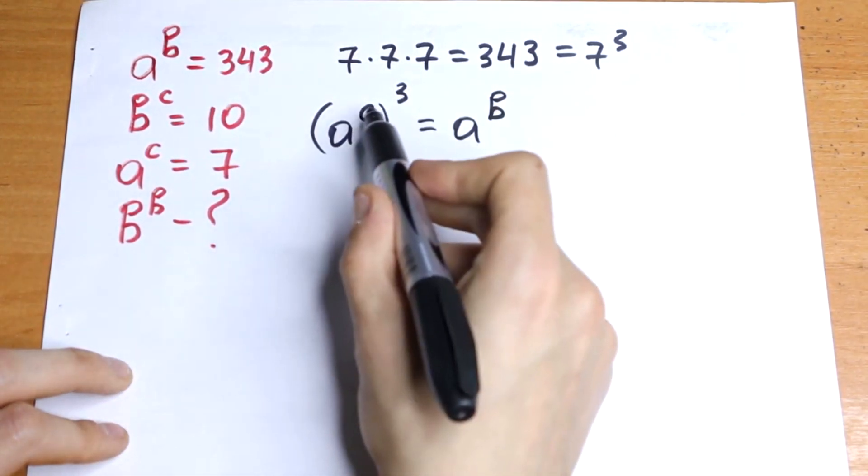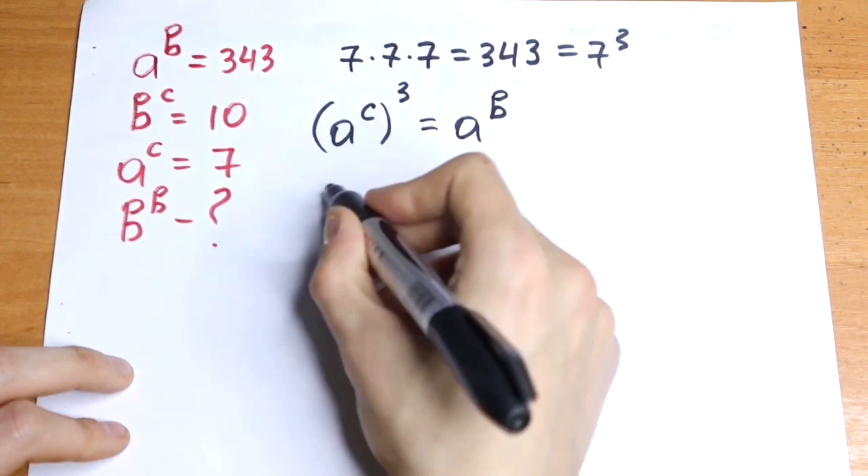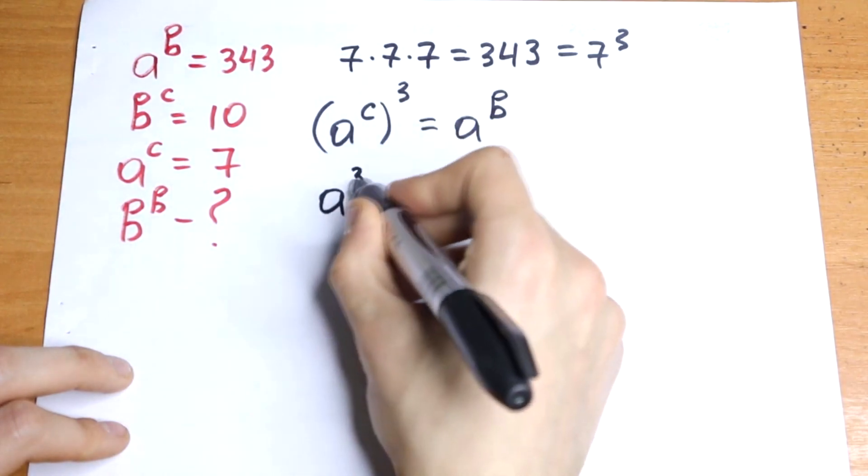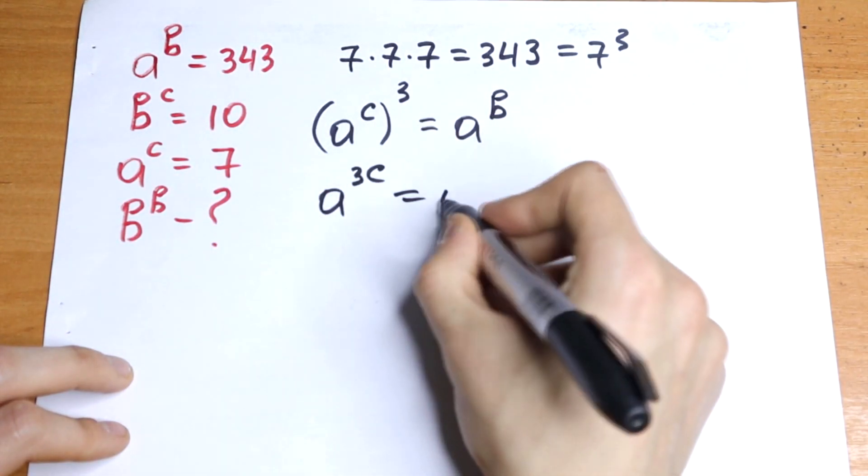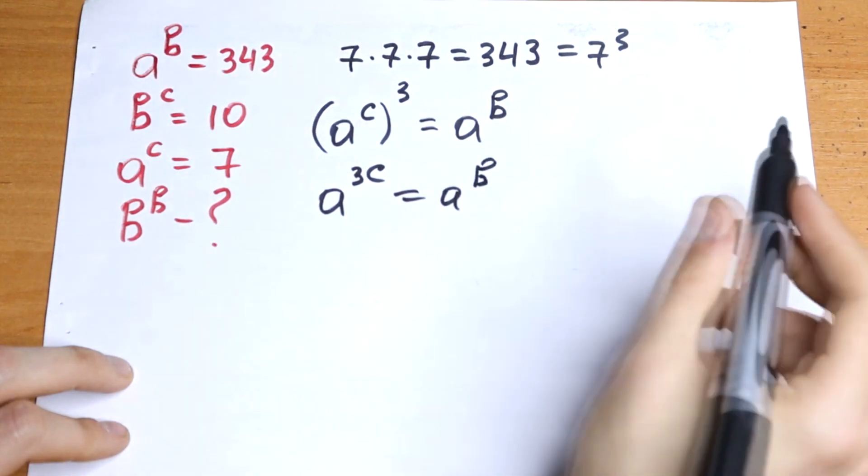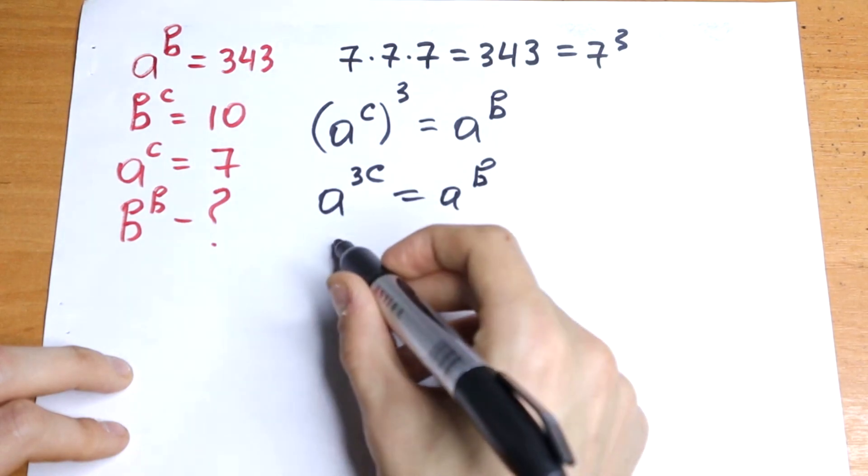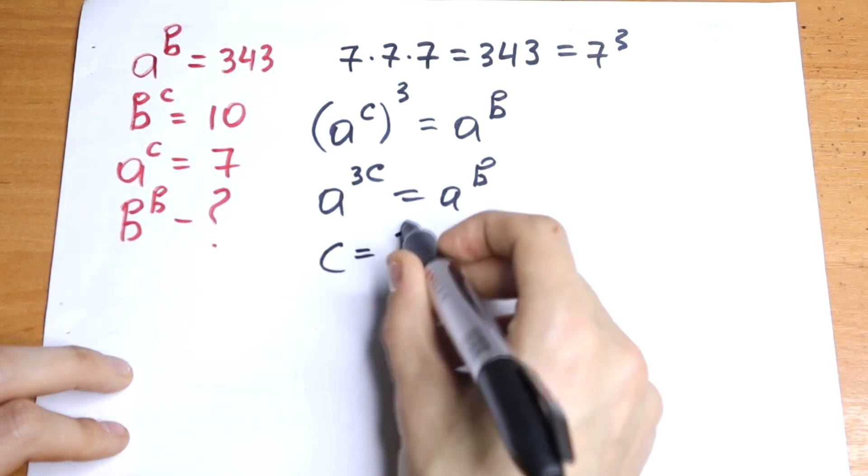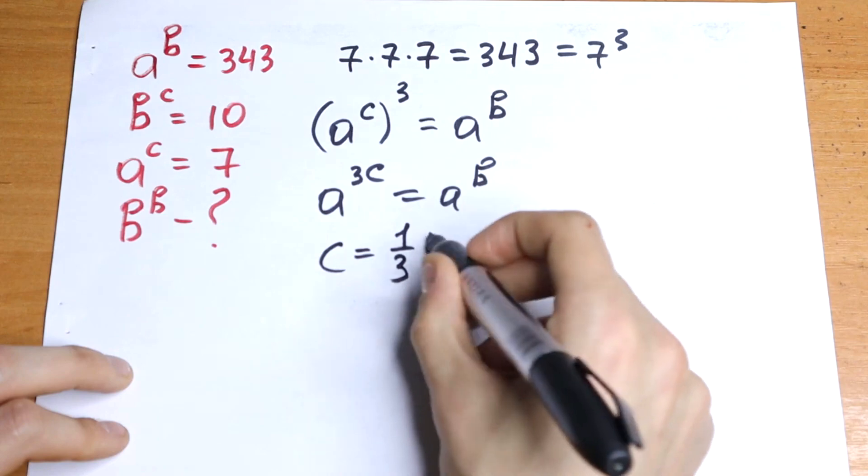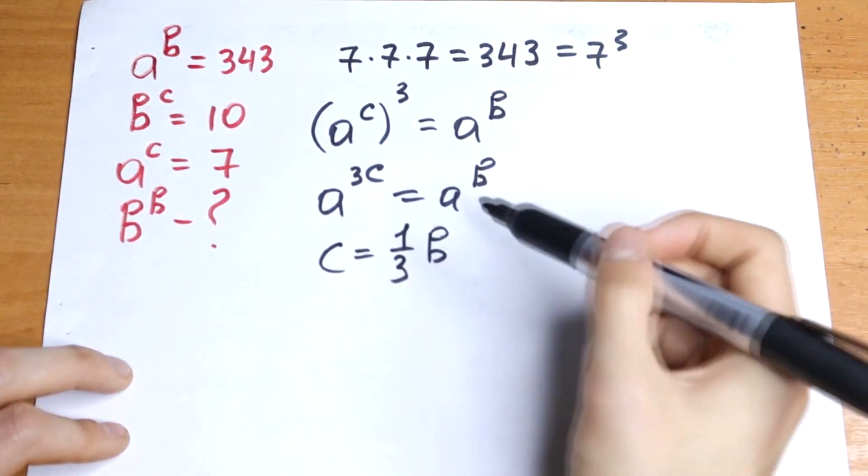What we are going to do next? We can multiply our powers so a to the power 3c equals a to the power b. And we have the same basis so we can write an equation with our exponents. So we will have c equal to 1 over 3 times b, one third b.